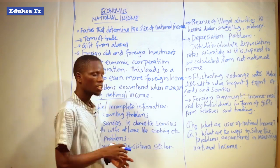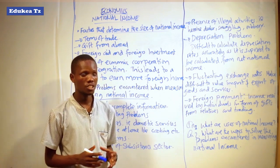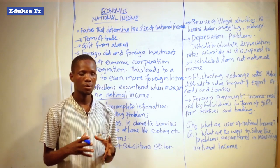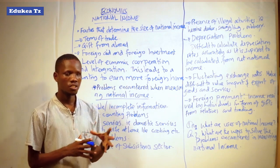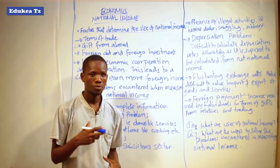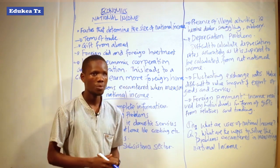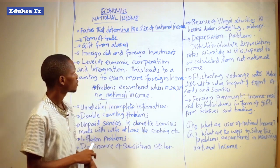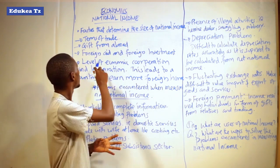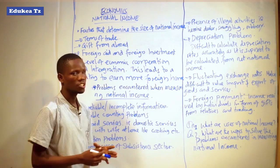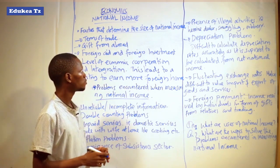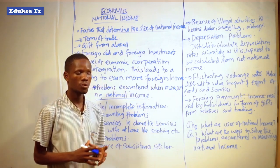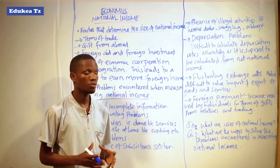A country with unfavourable terms of trade means that the country is getting low income from the exchange of goods and services from the domestic country to abroad. So these terms of trade determine the size of national income — favourable or balanced terms of trade means the national income will be high, rather than in a country with unfavourable terms of trade.